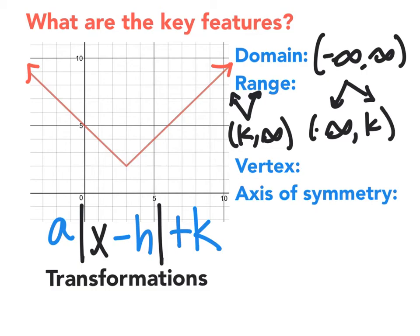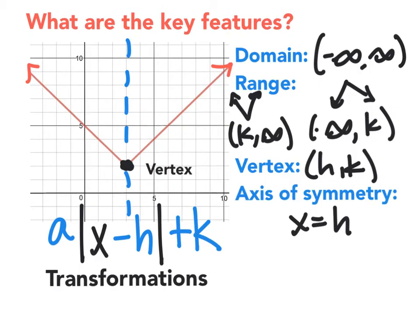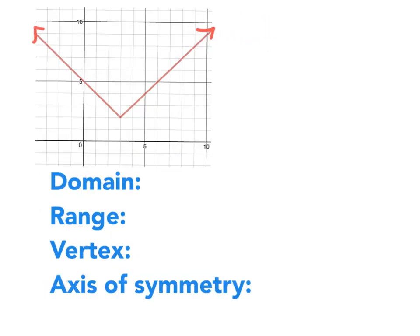The vertex, which is this point right here, the vertex is always at the point h, k. And the axis of symmetry, which is this invisible line that goes right through the middle where it's symmetric about this axis, this is always at x equals h. And one quick little fix. These k's should have brackets because the k is included in these absolute value graphs.